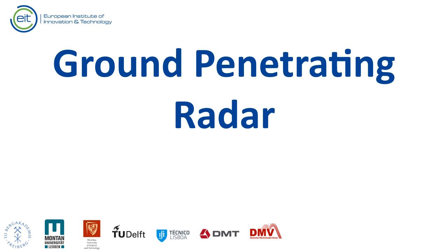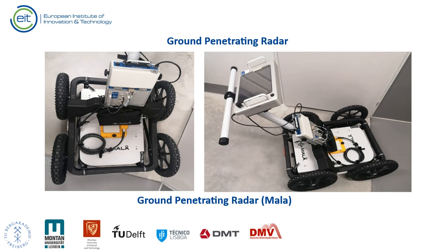Ground penetrating radar (GPR): a transmitter emits high-frequency electromagnetic pulses (25 MHz to 6 GHz) into the ground. We record the amplitude and travel time of the energy reflected back to the surface. The method responds to variation in dielectric properties and apparent resistivity of the ground. The dielectric constant is directly proportional to attenuation and travel time of electromagnetic waves. The velocity of electromagnetic waves in fresh water is 0.034 m/ns. The relative dielectric permittivity of fresh water is 80, dry sand is 3, saturated sand is 20–30, clays is 5–40, and shales 5–15.